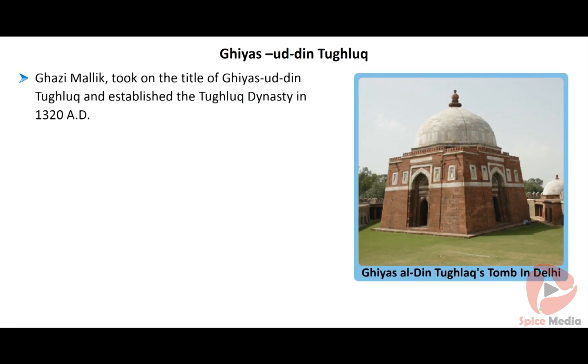Malik, the governor of Punjab, assisted by a group of nobles, captured Delhi and ascended the throne. He took on the title of Giyasuddin Tughlaq and established the Tughlaq dynasty in 1320 AD.